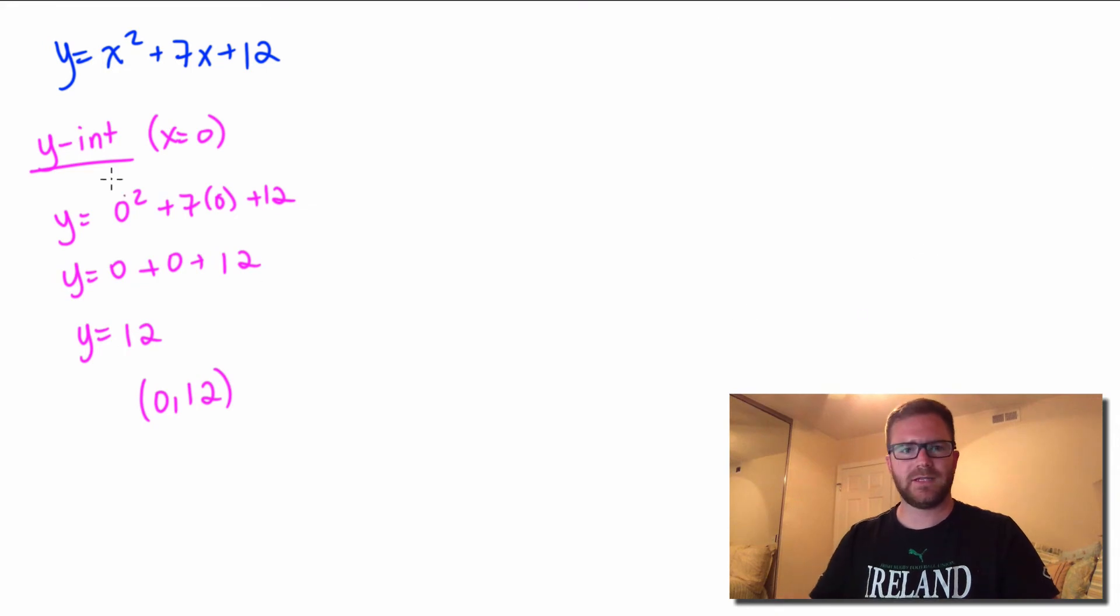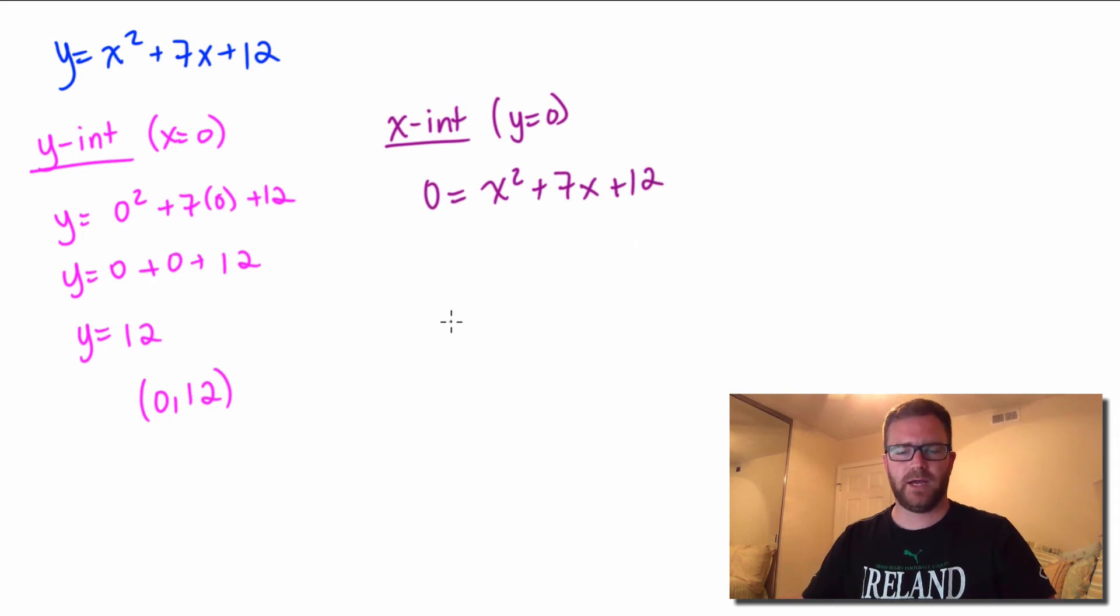Alright, so now let's take a look at finding the x-intercepts. So x-intercepts occur when the y-value is zero. When the y-value is zero. So we take zero and we substitute it in for y. So we get zero equals x squared plus 7x plus 12, and then we have to solve for x.